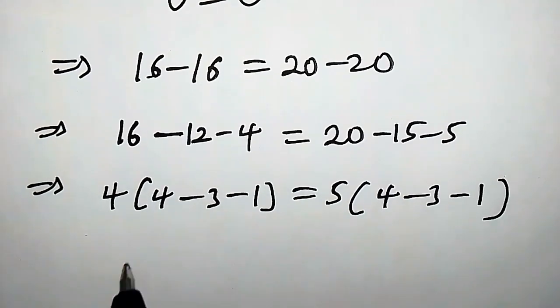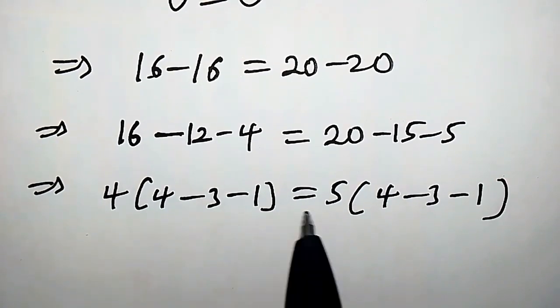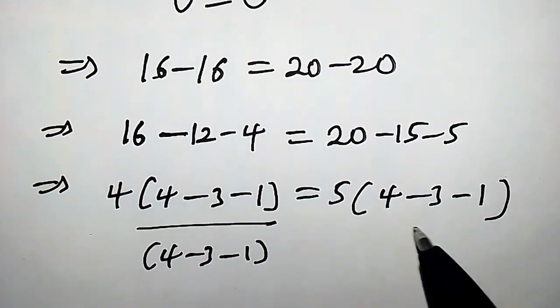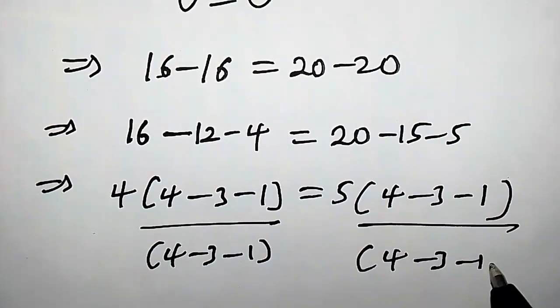So we are good to go. Now let's divide both sides by 4 minus 3 minus 1. So we're gonna have 4 minus 3 minus 1, likewise there we're gonna have 4 minus 3 minus 1.